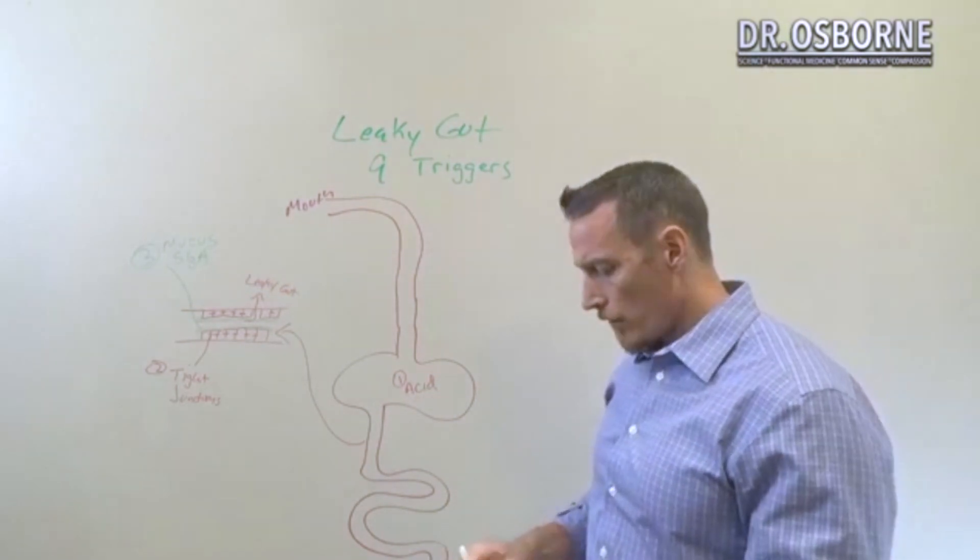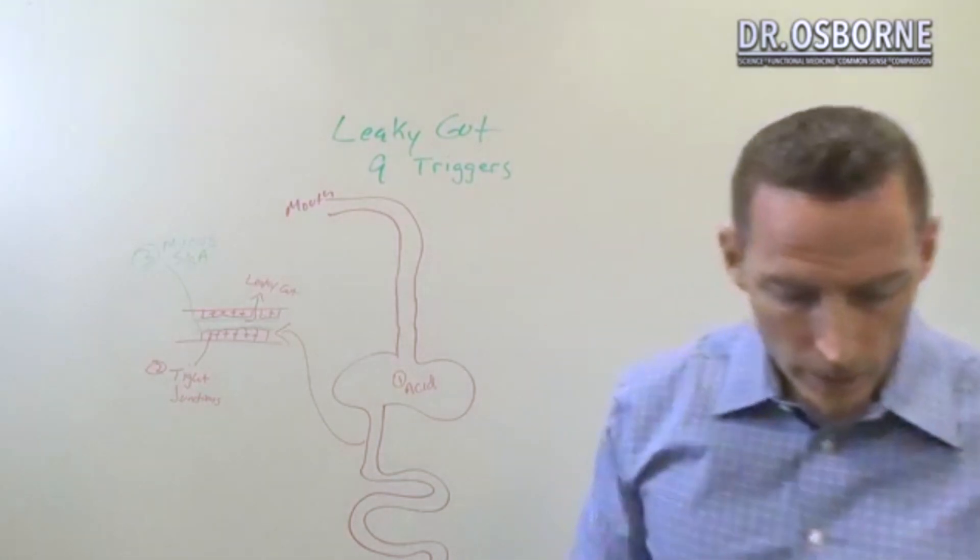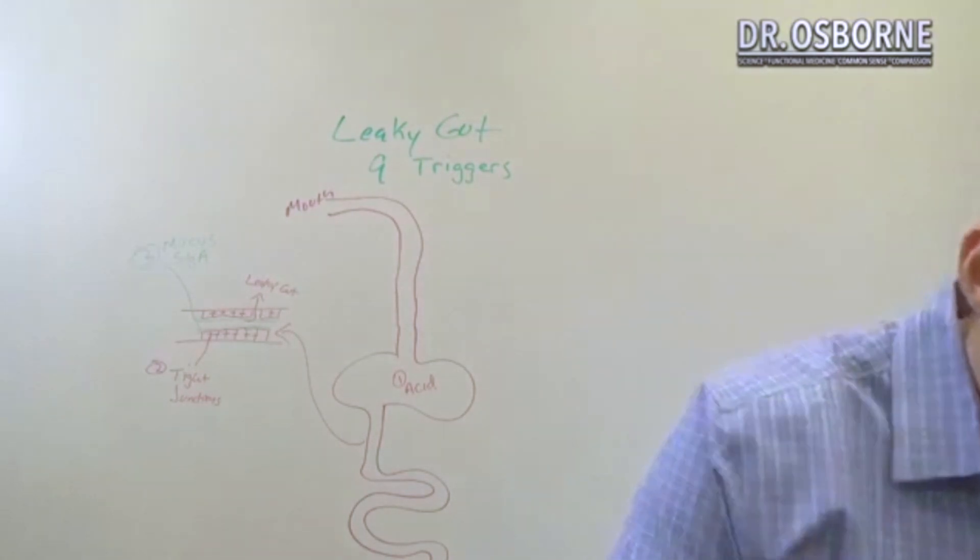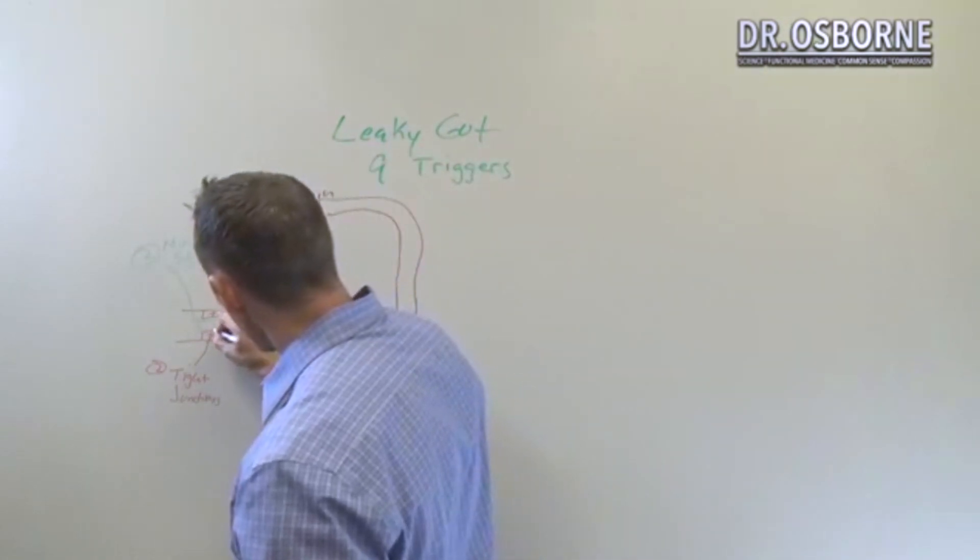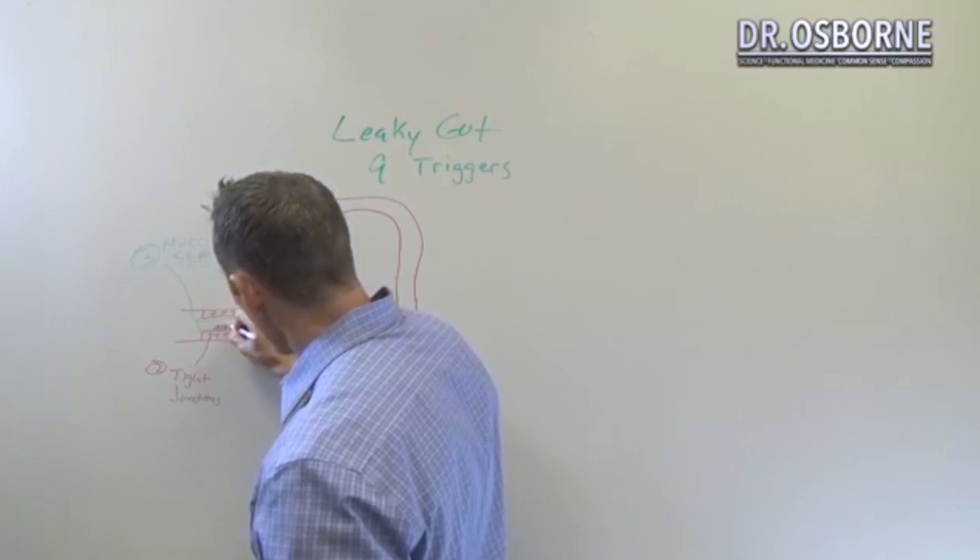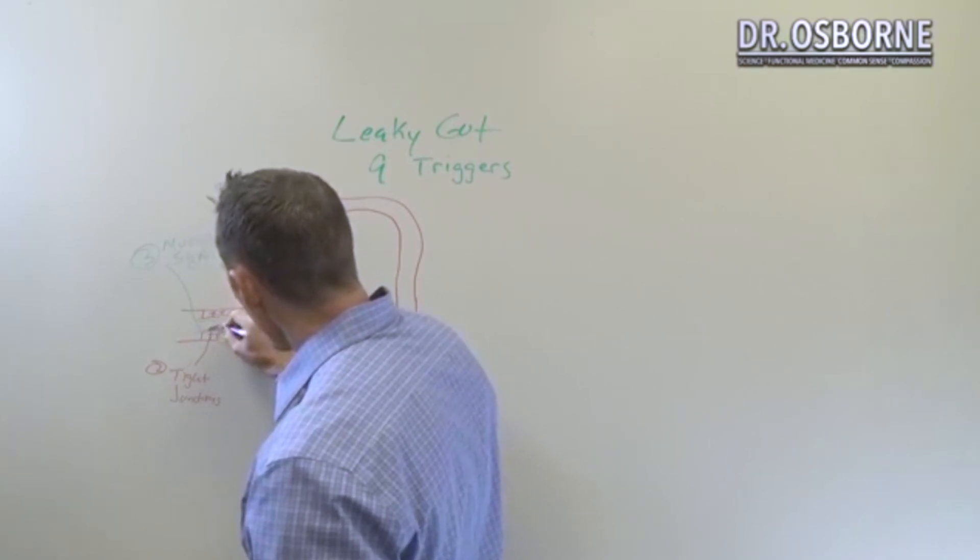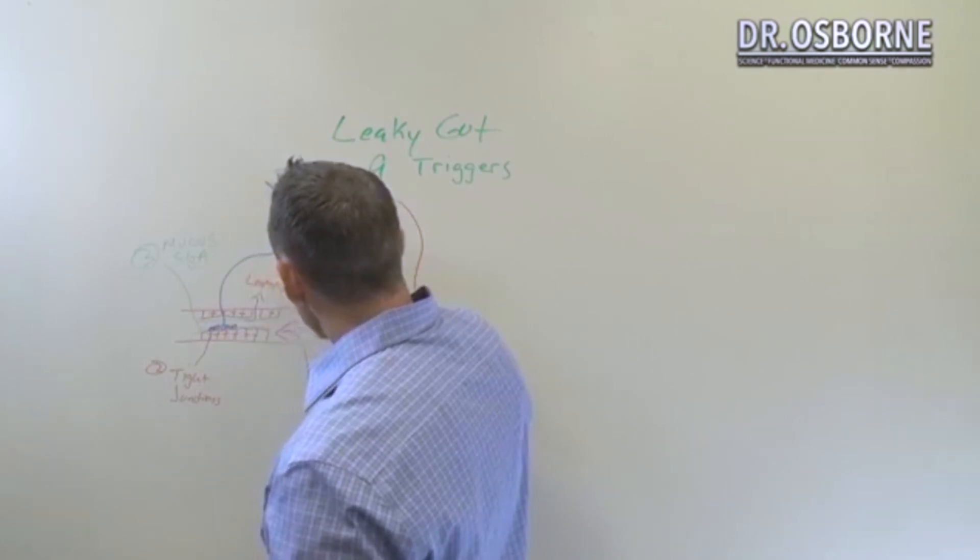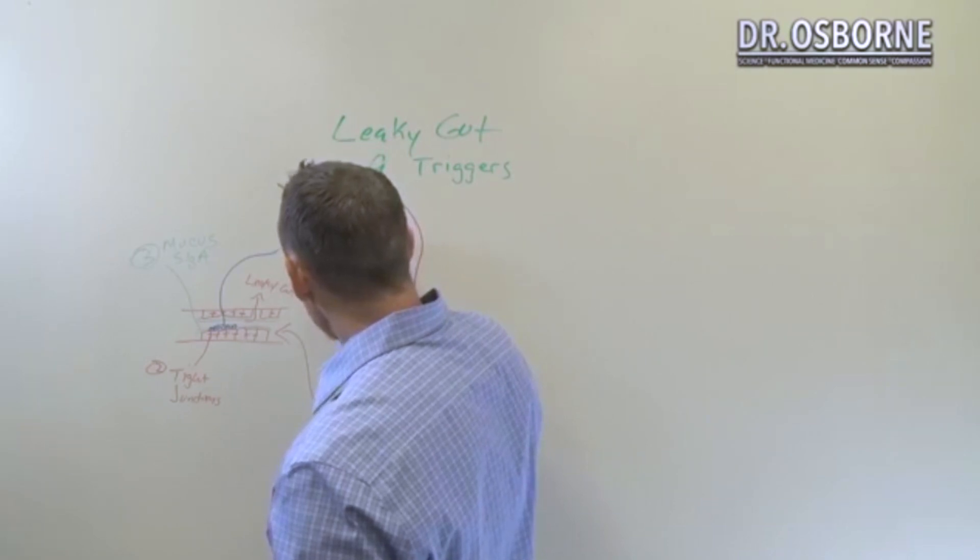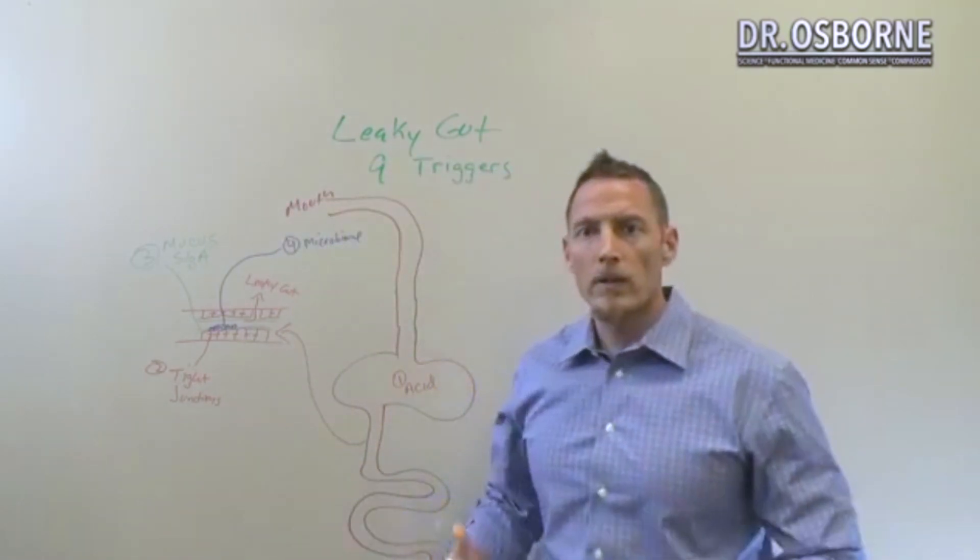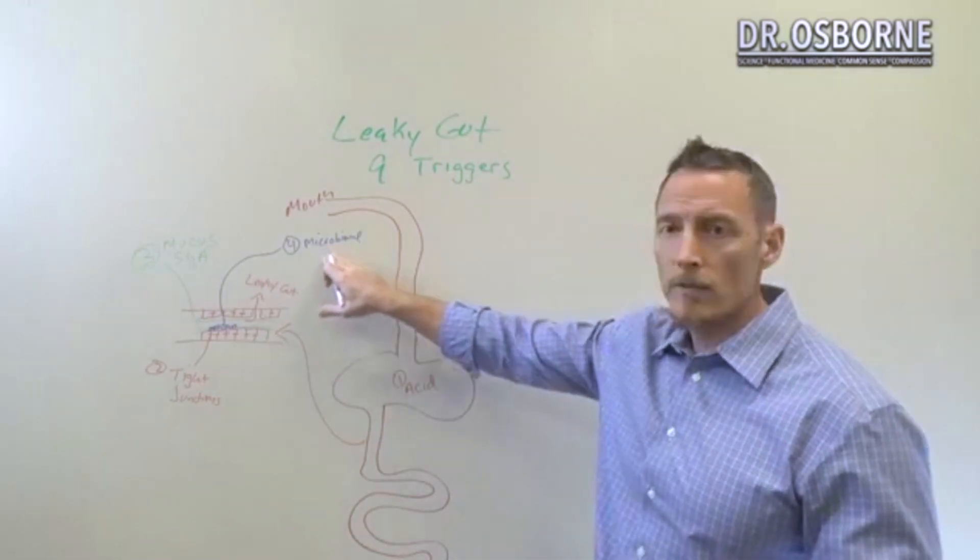Then we have a fourth barrier - and that fourth barrier, let's use a different color - is the bacteria, oftentimes referred to as the microbiome. So think about it - it's embedded in the mucus. Some people call it probiotics, but these are your good bacteria, your good fungus, your good yeast - the guys that are supposed to be there that live there.